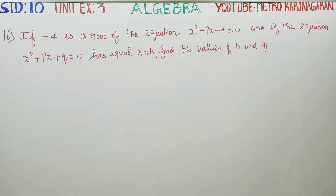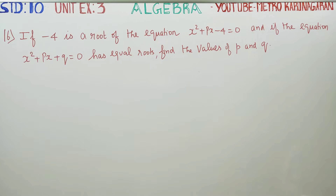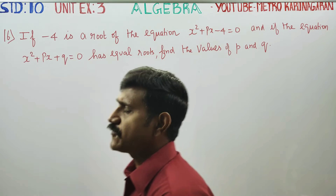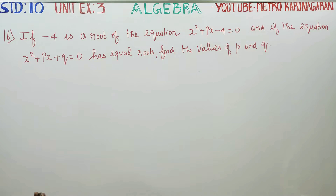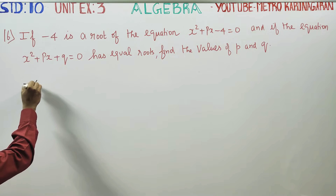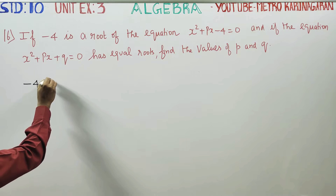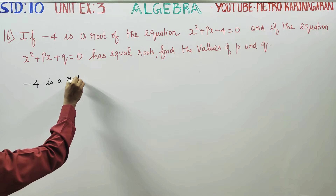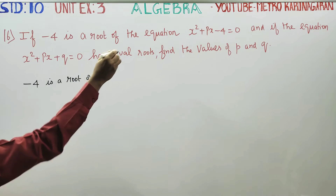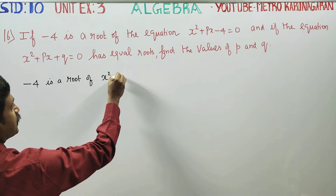Dear 10th standard students, in algebra exercise number 3: if minus 4 is a root of the equation x squared plus px minus 4 is equal to 0, and if the equation has equal roots, find the values of p and q. First, since minus 4 is a root of this equation x squared plus px minus 4 equals 0.